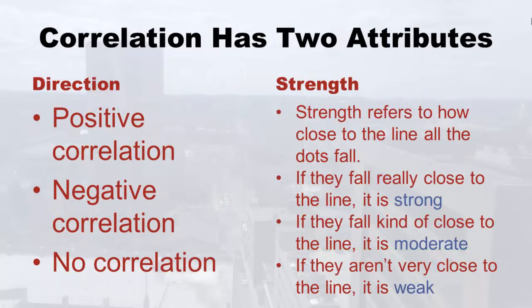Correlation actually has two attributes. So far we've only talked about one — direction. We talked about positive, negative, and no correlation. But you also have to state the strength. Strength refers to how close to the imagined line all of the dots fall. If they fall really close to the line, it's considered strong. If they fall kind of close, it's called moderate. If they aren't very close to the line, it's weak.